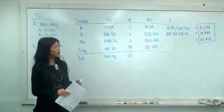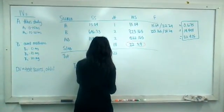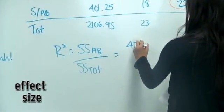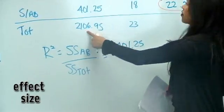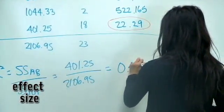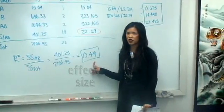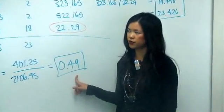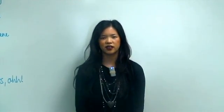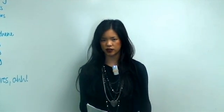For effect size, R-squared equals the sum of squares for the interaction AB divided by the total sum of squares. The SS within is 401.25, and you get the total SS by adding all SS terms. Dividing gives 0.49 — by almost any standard, that's a huge effect size, meaning 50% of variance is attributed to the independent variables. Our three F values are 0.6, 14.5, and 23.4. The interaction A times B has F = 23.4, which gives a significant interaction — that's what we were here for.